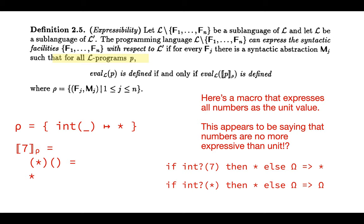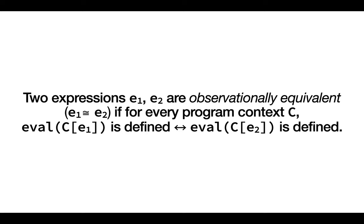For those familiar with observational or contextual equivalence, this trick should seem familiar: I took two things that seemed the same and wrapped them in a context that can tell them apart. Two arbitrary expressions are observationally equivalent if for any context C, plugging in E1 terminates if and only if plugging in E2 terminates. This looks very similar to the definition of expressibility — and that's not a coincidence.